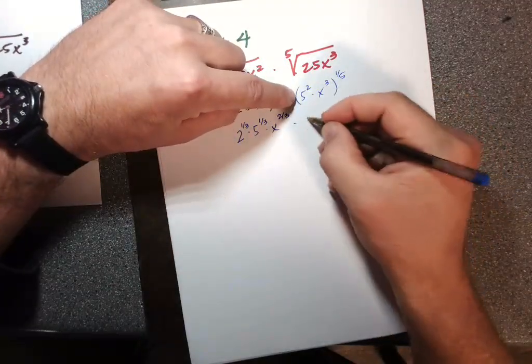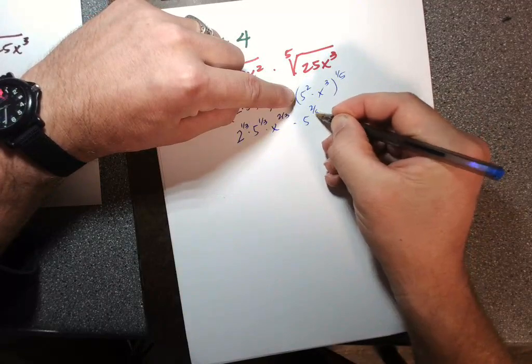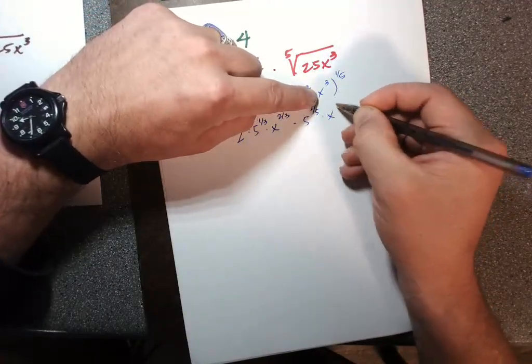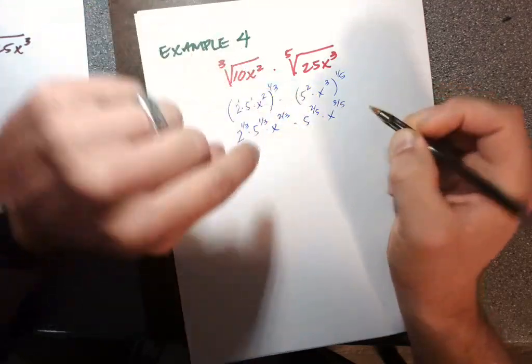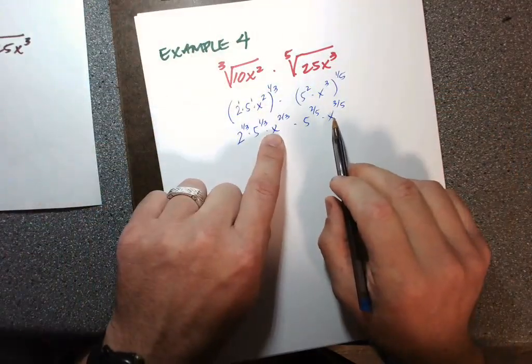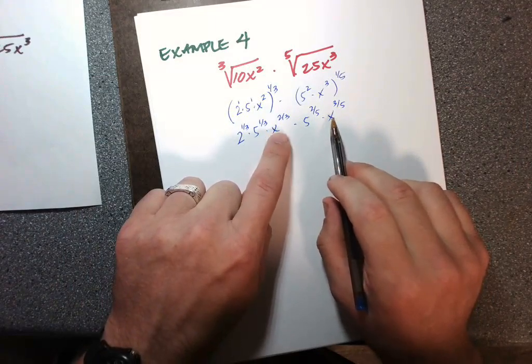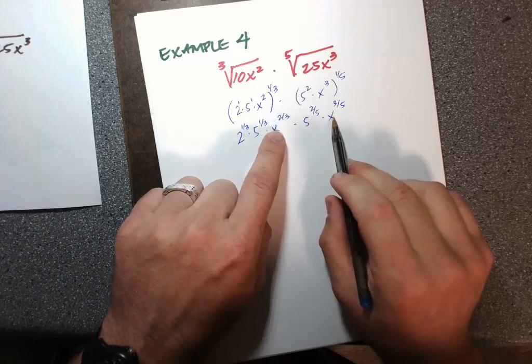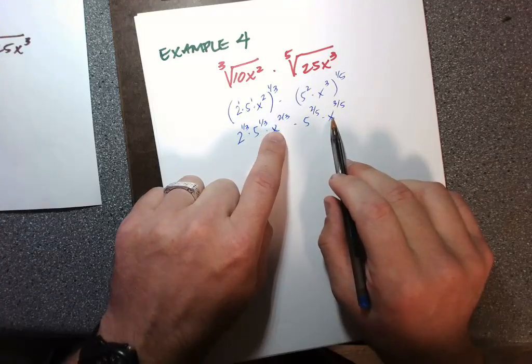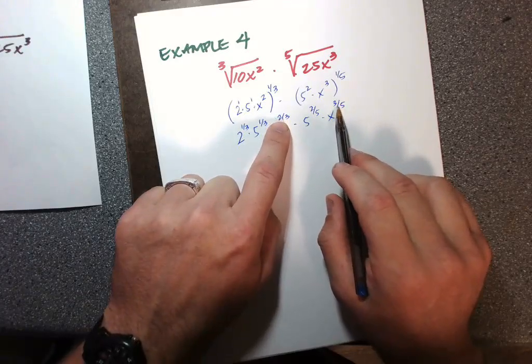And then we can add like these bases. The x's, those are the same. And so when you multiply things that are the same base, you add the exponents, which is going to require a common denominator.